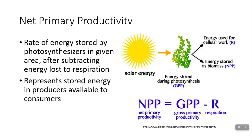Net primary productivity is what happens when you take away the energy being used for work to keep a plant alive. Solar energy is transferred into chemical energy stored during photosynthesis — that's gross primary productivity. Out of all that energy, some gets used for work, represented by R for cellular respiration. The rest that's not used by the plant gets stored as biomass — grow new leaves, stems, make the plant larger, grow seeds. That stored biomass is available to any consumer that comes along and eats the plant. So net primary productivity equals total photosynthesis minus the amount actually used by the plant, representing what's available to the rest of the ecosystem.